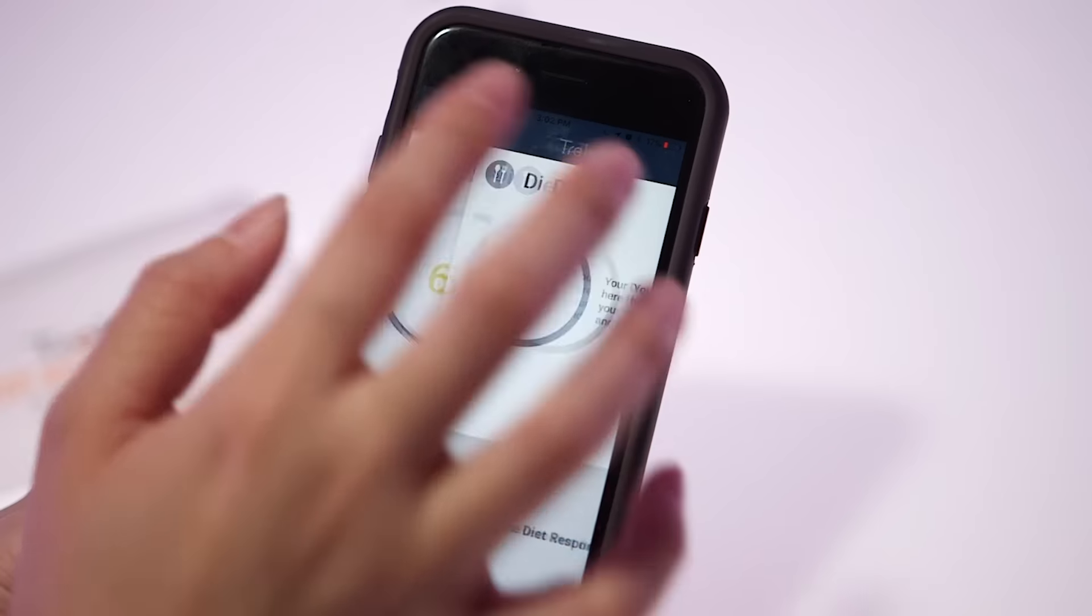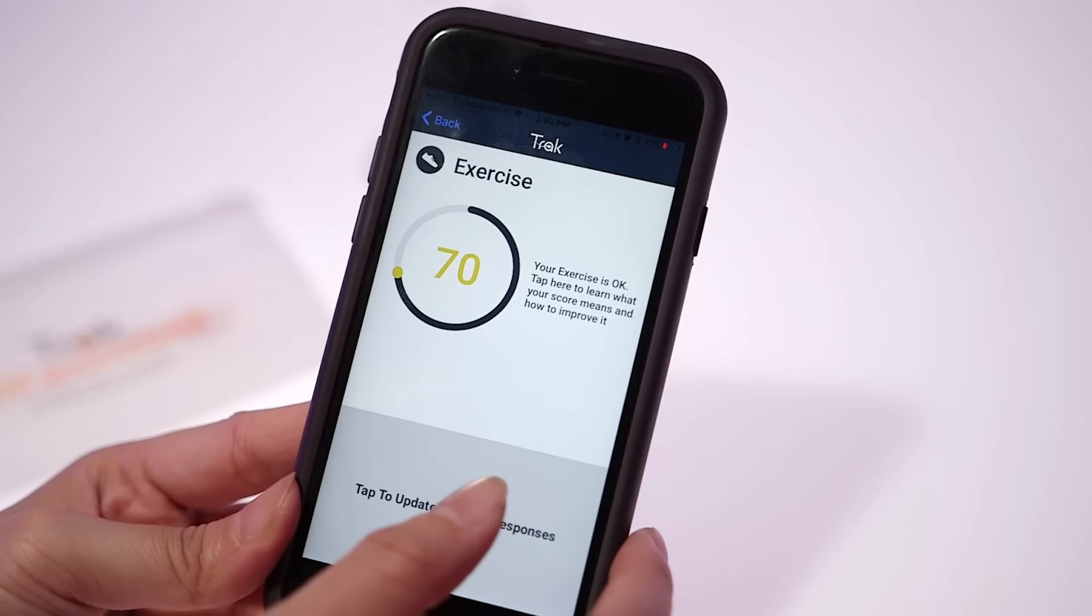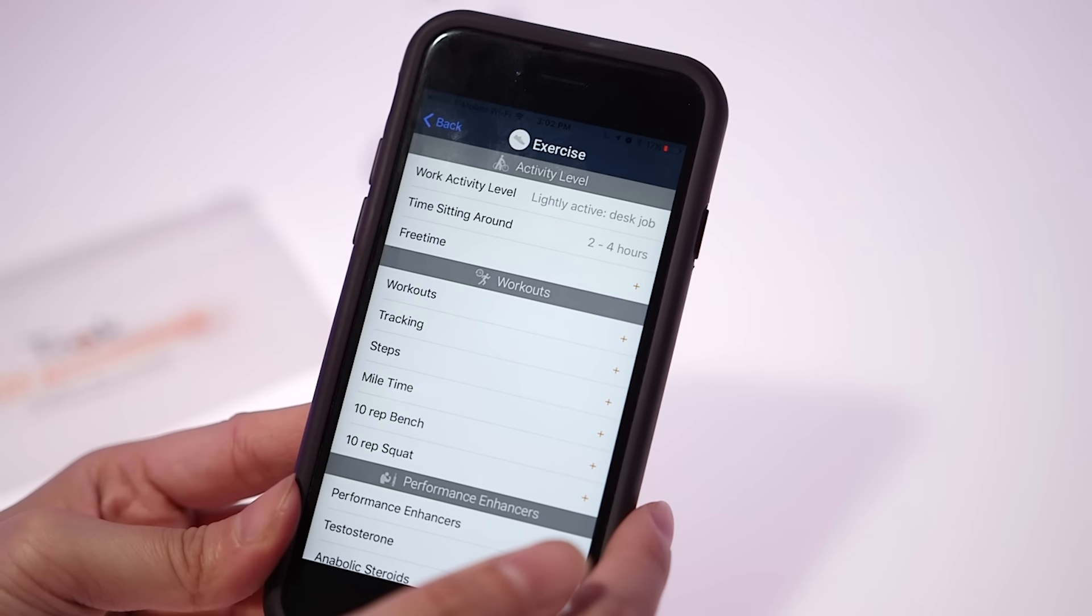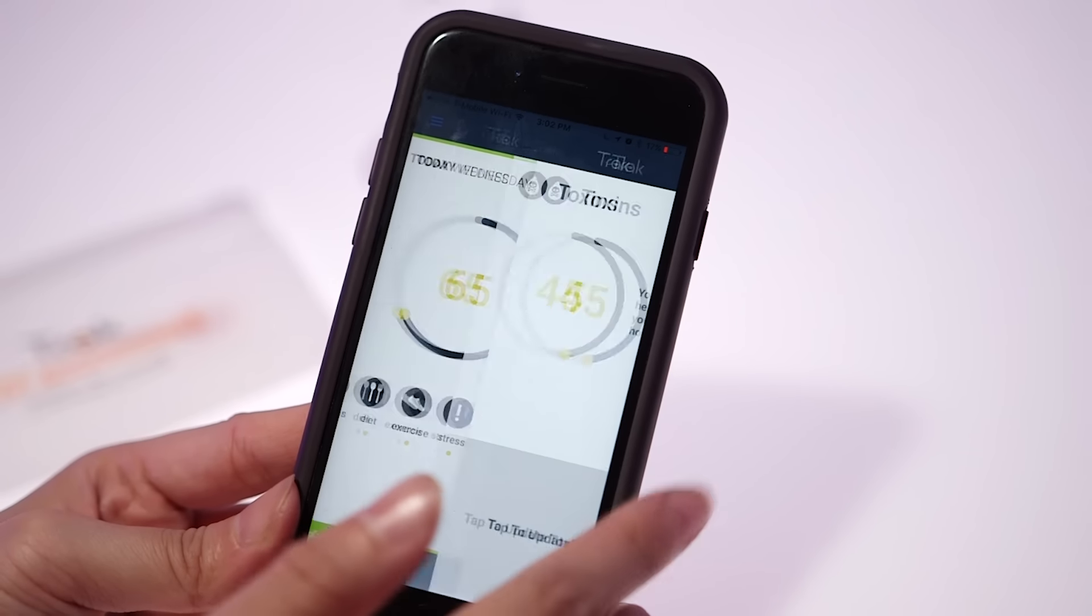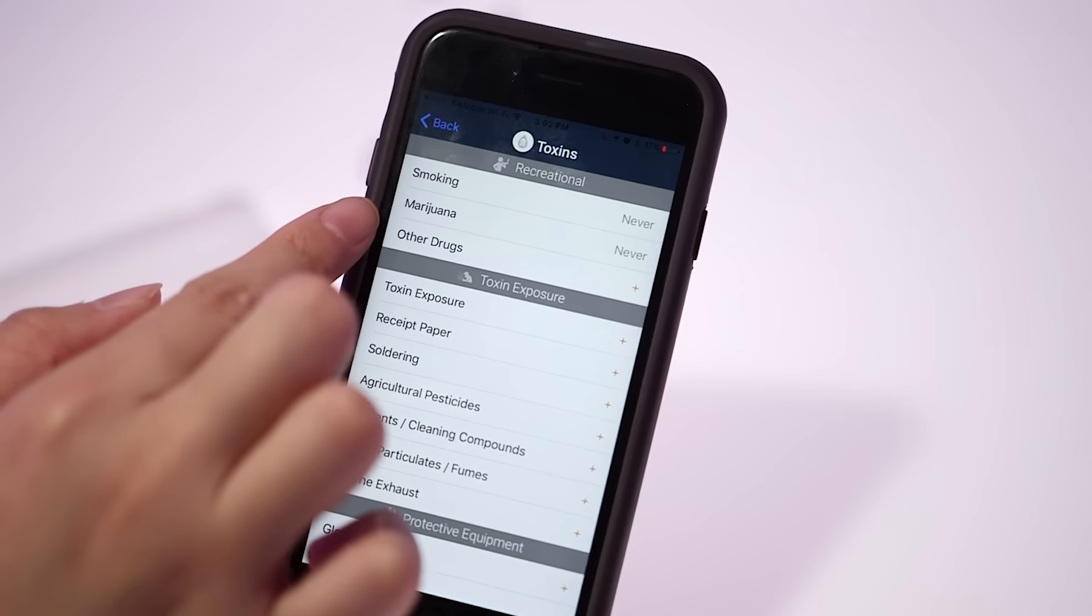This system also differs from others in that it teaches you how to improve your results. TRACK's companion app provides tips on how to increase production levels by adjusting factors that include diet, sleep, and exercise. Over time, you can see if your lifestyle changes have caused any differences to your sperm count.